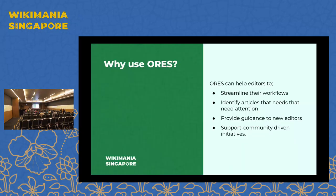ORES helps contributors to streamline their workflows by aggregating certain kinds of articles and helping them know which articles to work on or contribute to. It also helps experienced editors to identify new editors contributing to Wikimedia projects and guide them, providing assistance in contributing to Wikimedia projects, especially English Wikipedia.